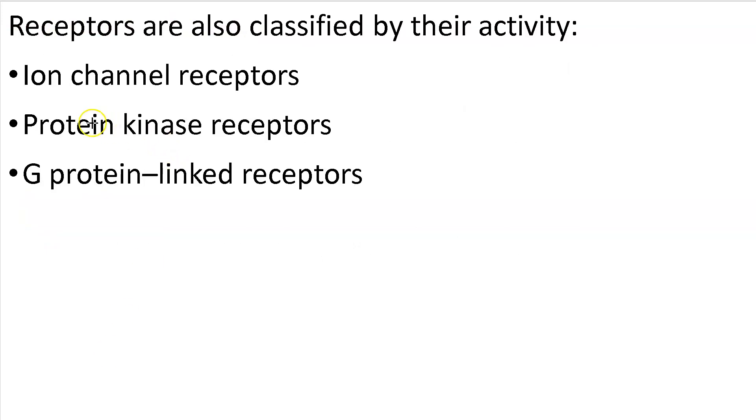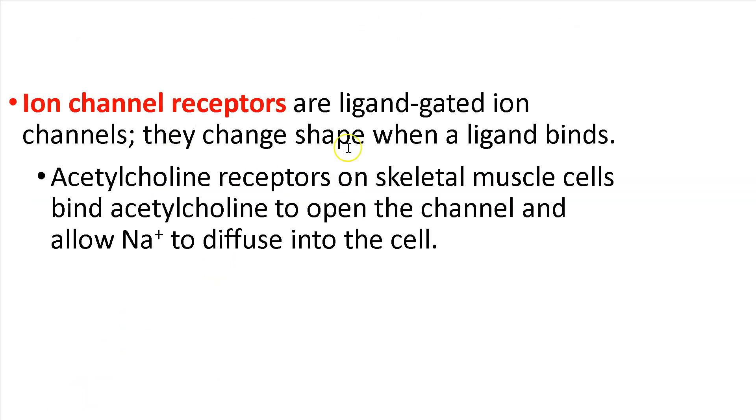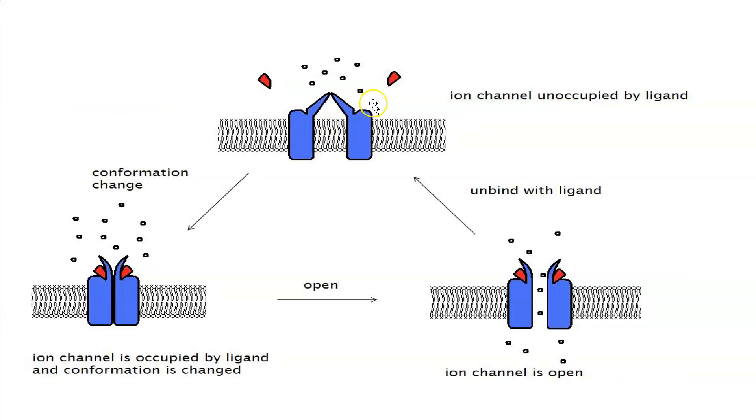Receptors are also classified by their activity. So there's three different types of receptors, ion channels, protein kinase, and G protein linked. So you don't have to know too much in depth with these. I would just note in general that ion channel receptors are ligand gated ion channels. So they change shape when a ligand binds. So for example, acetylcholine receptors on skeletal muscle cells bind acetylcholine to open the channel and allow sodium to diffuse in. So here's a picture here. Ion channel unoccupied. It binds, conformation is changed, and then it's open, lets things through, then go back to the original state.